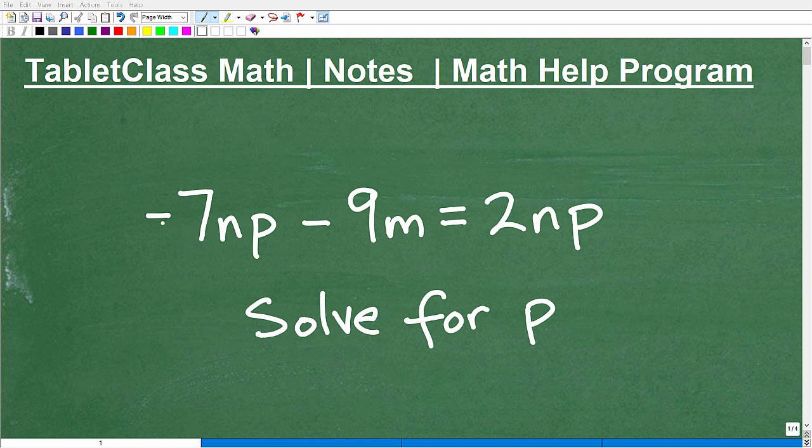Okay, so we have the equation negative 7np minus 9m equals 2np, and what we want to do here is solve for p. In other words, we want to rearrange this equation such that it's written as p equals whatever it's equal to.